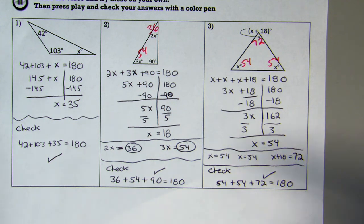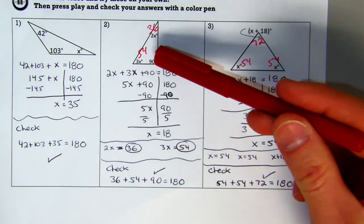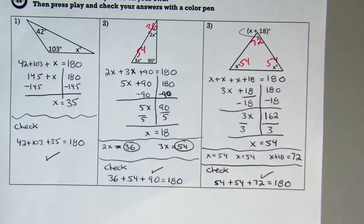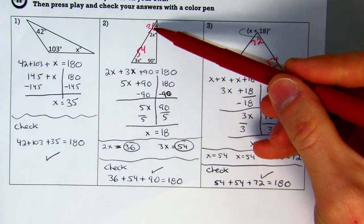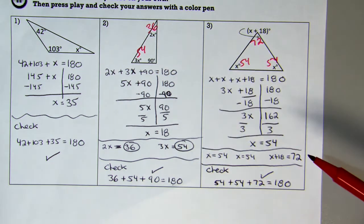My next one is I have 2x plus 3x plus 90 equals 180. Find that my value of x is 18. I then plug my 18 in to get a value of 36 and 54, and then I check to make sure it works by adding them all up.